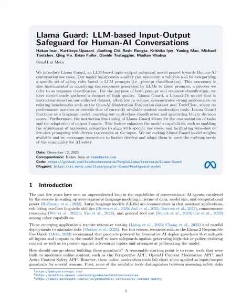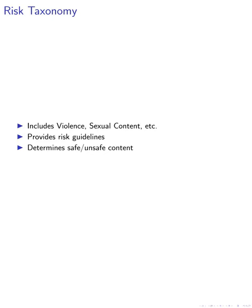In this paper, we first establish a safety risk taxonomy, which includes categories such as violence and hate, sexual content, guns and illegal weapons, regulated or controlled substances, suicide and self-harm, and criminal planning. We also provide risk guidelines that help determine what content is considered safe or unsafe within each category.